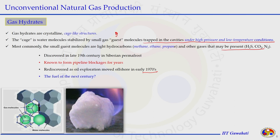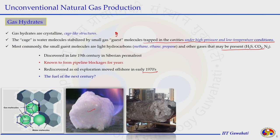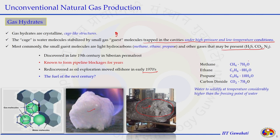This kind of massive solid structure forms and blocks pipeline transportation. The gas molecules within the water structure can be methane, ethane, propane, or carbon dioxide. About 7 water molecules are required to trap one molecule of methane, causing water to solidify at a temperature considerably higher than the freezing point of water. To prevent this formation in pipelines, water molecules are separated before natural gas is transported, or the pipeline is kept away from low temperature and high pressure regions. It was rediscovered as a potential energy source as oil exploration moved offshore in the early 1970s.